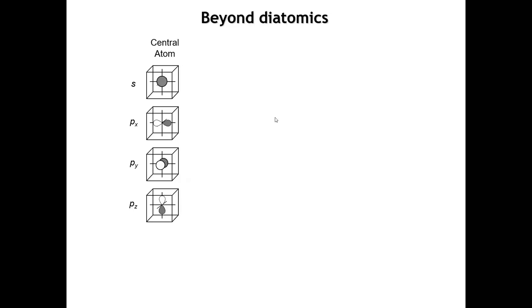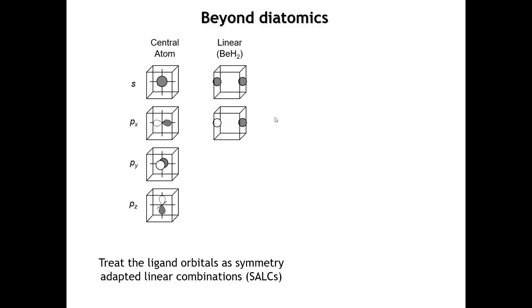What if we want to go beyond diatomic molecules? In a materials class we can't get very far talking only about diatomics. So when we go to molecules with more than two atoms, the approach we're going to take is to decompose the molecule into a central atom, and then take the atoms on the outside — called ligands in inorganic chemistry — and treat the ligands as a group. We group the ligand orbitals by symmetry into something called a symmetry-adapted linear combination (SALC) of ligand orbitals.